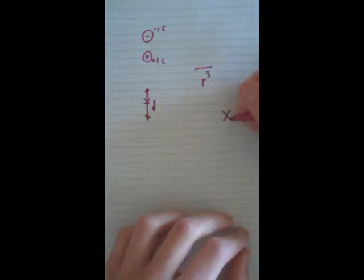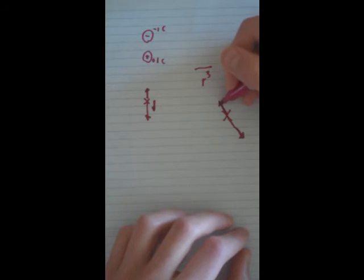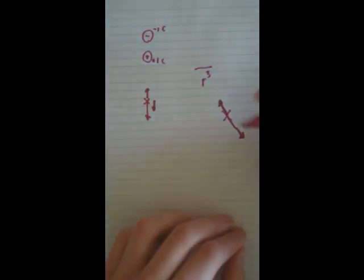If it's at a different point, let's say right here, again the positive is pushing away and the negative will be pushing towards it. It will be a little smaller because it's farther, so your net field will be like this.